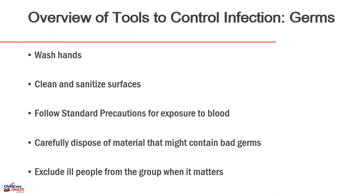Number one in the overview of tools to control infection is hand washing — the most important thing at all times. We reduce the number of disease-causing germs from entering the body by focusing on this as our primary defense. Also important: cleaning and sanitizing surfaces, following standard precautions for exposure to blood, properly disposing of materials that might contain germs such as tissues, and excluding ill people from the group when it matters.